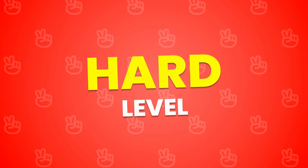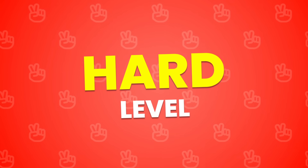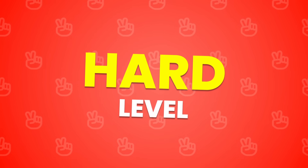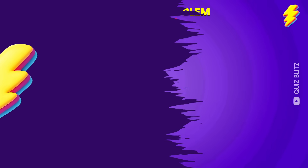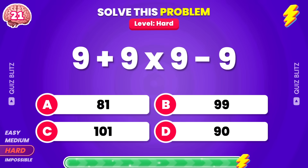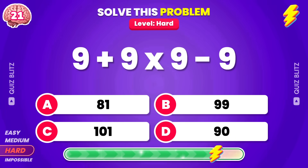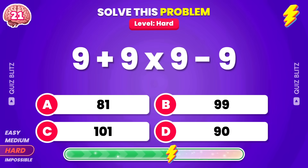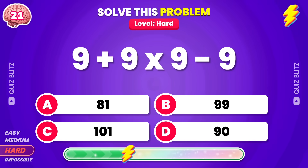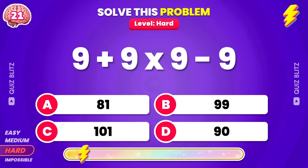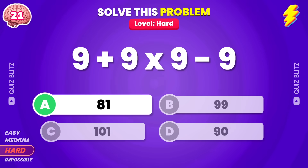This is the hard level, time to shine! 9 plus 9 times 9 minus 9. The answer is 81. Well done!